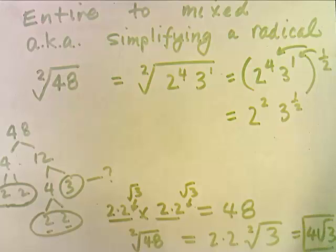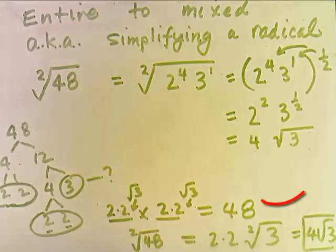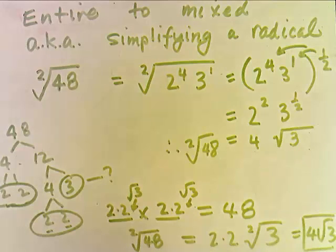That is 2 to the 2nd power and 3 to the 1 half power. 2 to the 2nd is 4 and 3 to the 1 half power is the square root of 3. We get the same result using our power rules. The square root of 48 is 4 root 3 by a different method.